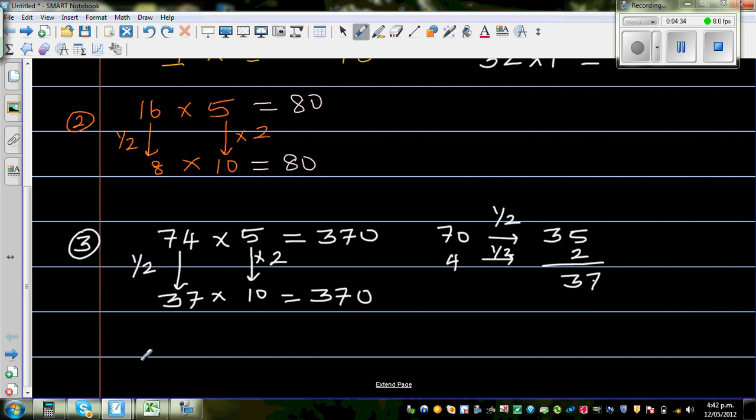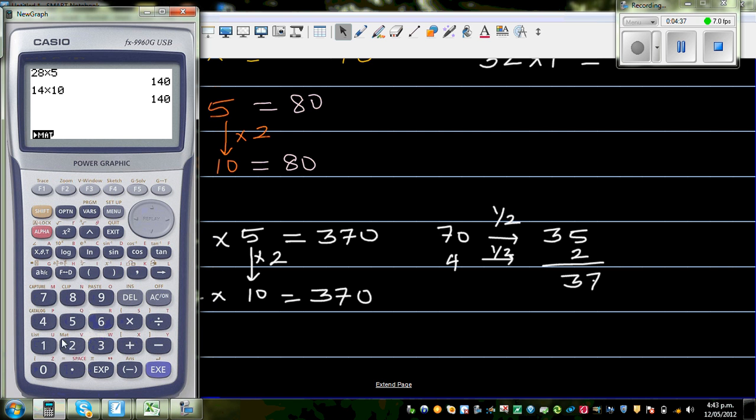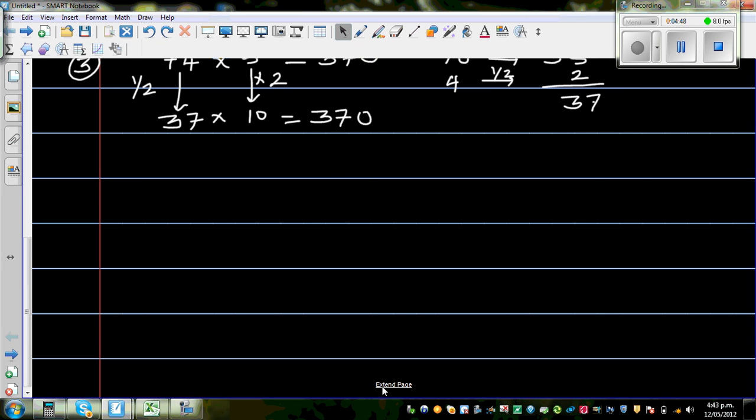Let us do that on the calculator. 74 times 5 is 370. And 37 times 10 is also 370.